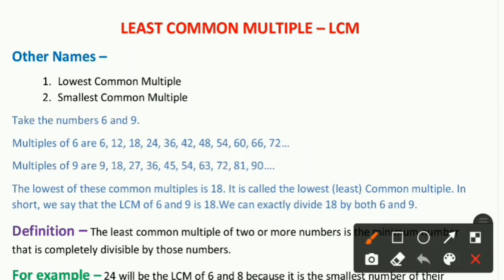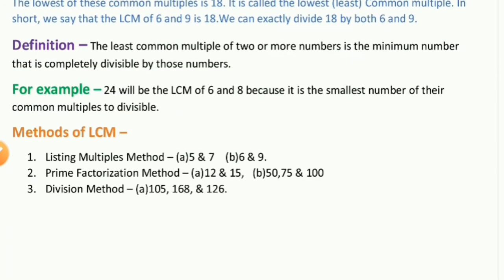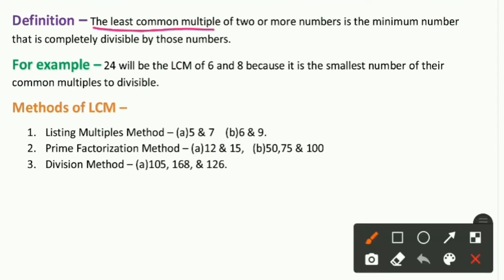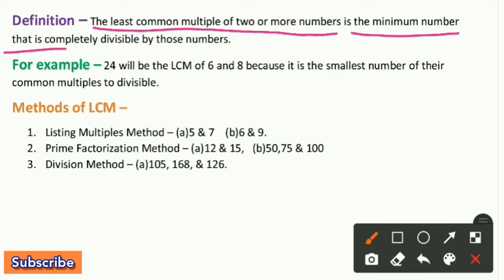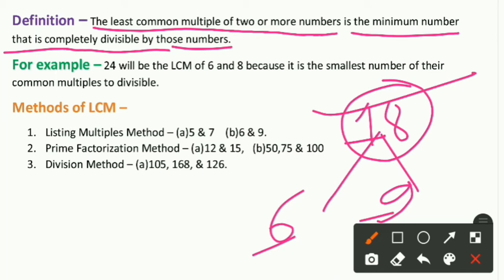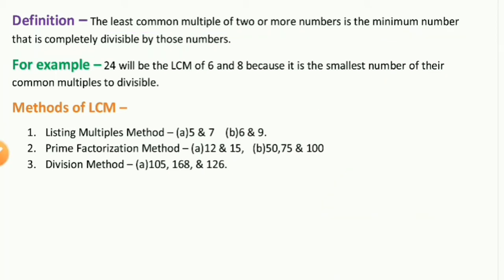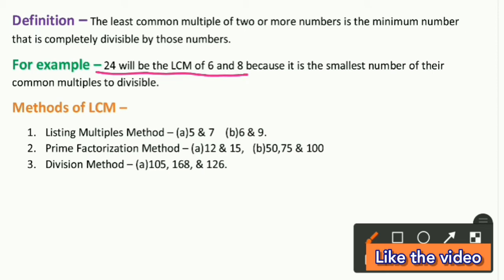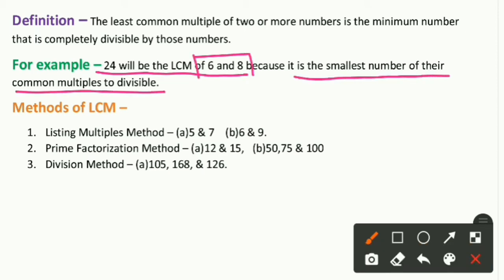Now we can give a definition: the Least Common Multiple of two or more numbers is the minimum number that is completely divisible by those numbers. As you saw, 18 was completely divisible by both 6 and 9, making it the LCM. Similarly, 24 is the LCM of 6 and 8, because it is the smallest number in their common multiples that both divide completely.